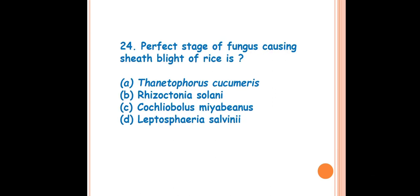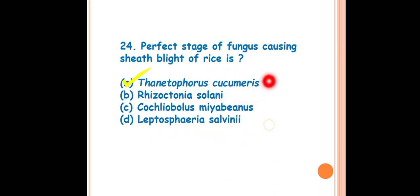Question 24: The perfect stage of the fungus causing seed blight of rice is? The answer is Thanatephorus cucumeris. The pathogen causing seed blight of rice is Rhizoctonia solani — that is the imperfect stage. The perfect stage of Rhizoctonia solani is Thanatephorus cucumeris, in which it produces its sexual spores.